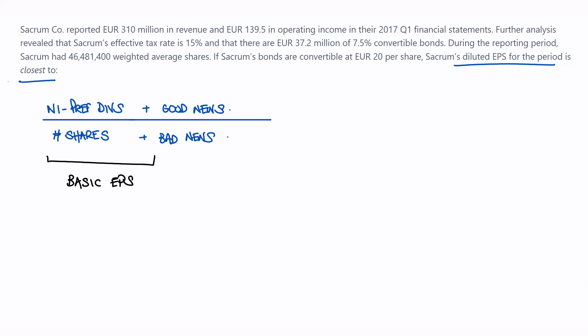Sacrum Co. reported 310 million euro in revenue and 139.5 million euro in operating income. I need net income, not revenue, so I'll set revenue aside and work with the 139.5 OI. Further analysis reveals an effective tax rate of 15% — relevant for convertible debt, not for preferred dividends or options. There are 37.2 million euros of 7.5% convertible bonds, which allows me to calculate interest, and I do need that tax rate.